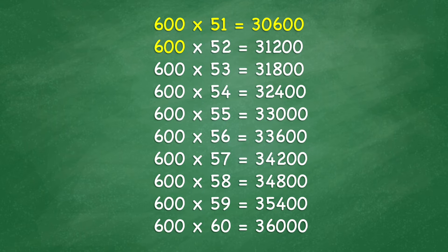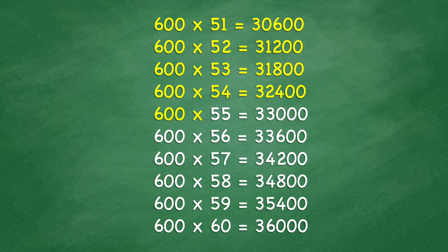600 x 52 equals 31,200. 600 x 53 equals 31,800. 600 x 54 equals 32,400. 600 x 55 equals 33,000. 600 x 56 equals 33,600.